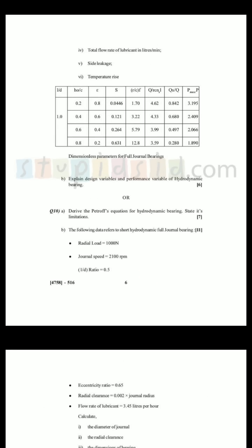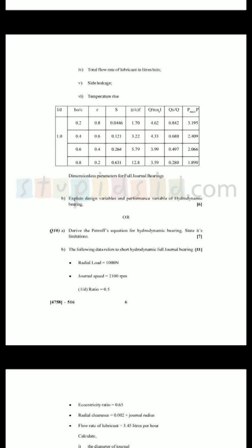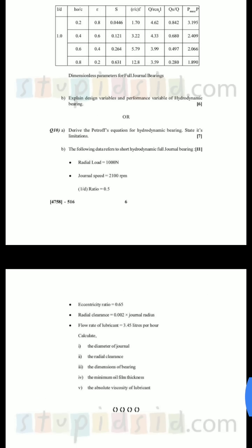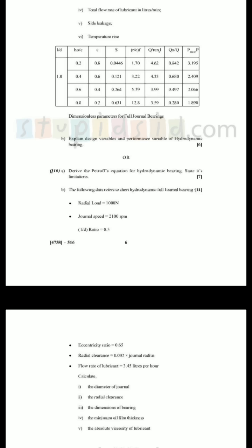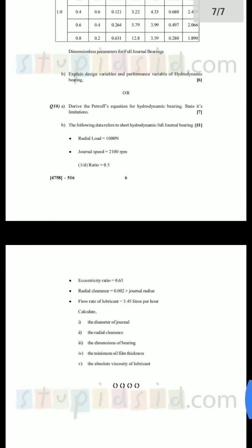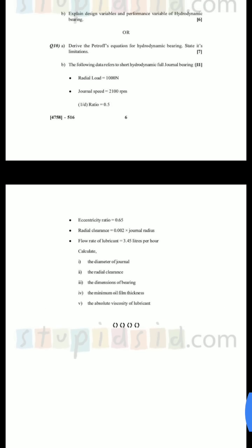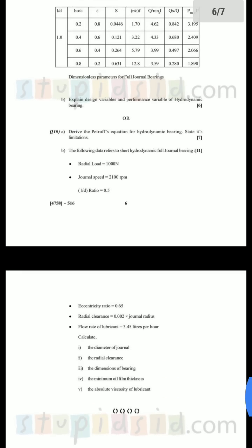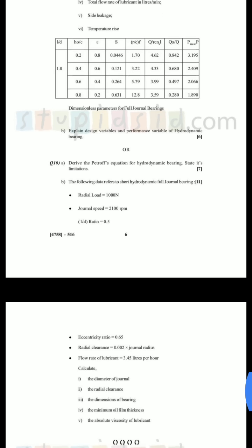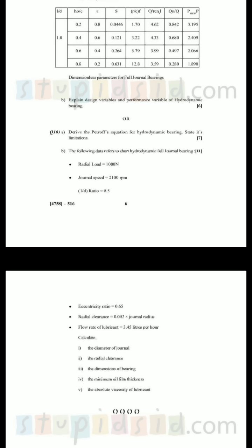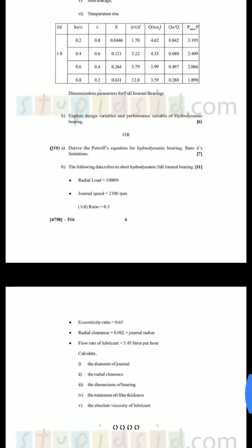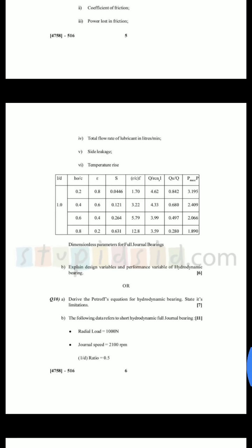As you can see hydrodynamic journal bearing has 11 marks numerical. W was given. Speed was given. L by D is 0.5. To my surprise, I have seen L by D ratio for the first time that is 0.5. No issue. Use 0.5 table and column for calculating the areas and the various values. Diameter of journal was to be found out. That is small d. C was to be found out. H is 0. And V. It was pretty simple. No problem.